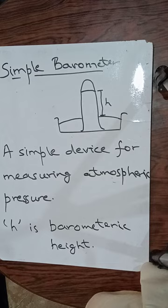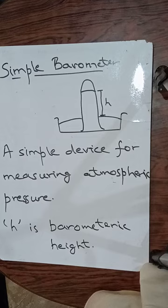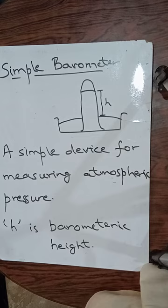We will take a glass tube of uniform diameter having a length of approximately 1 meter. One end of this tube is open and the other end is closed. It is filled with mercury and inverted over a trough containing mercury.